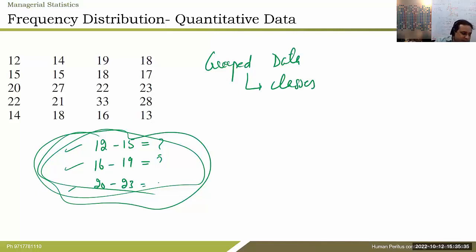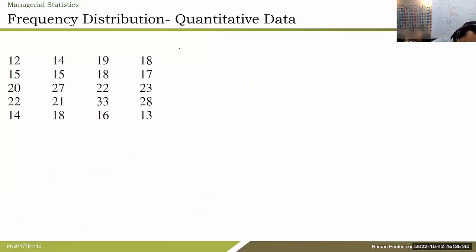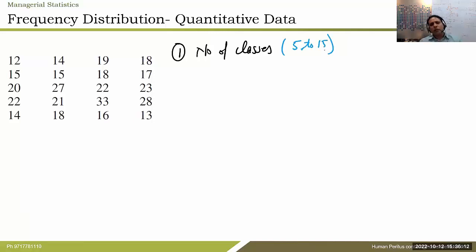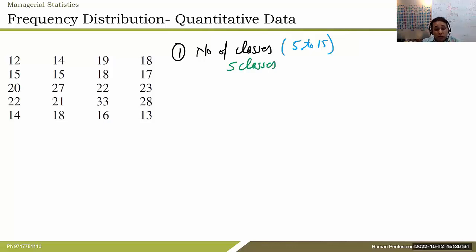To put any data into classes there are some steps. The first step is to choose the number of classes. Academic literature says classes should be between 5 and 12 approximately — some books say 5 to 10, some say 5 to 15. Based on this, let's say I decide I will have 5 classes. The second step is to find the width of class: take the highest value minus the lowest value, divided by the number of classes. Highest value is 33, lowest is 12, so (33 − 12) / 5 = 4.2, which we round up to 5.